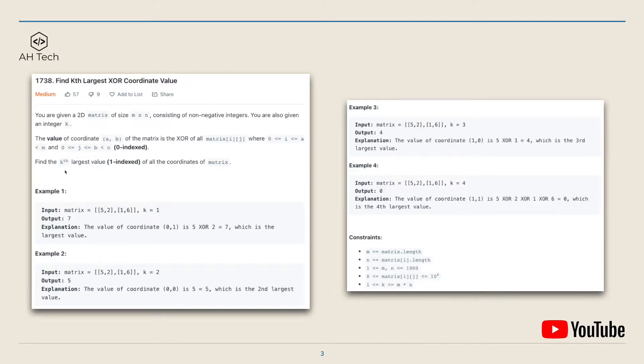We are asked to find the kth largest value of all coordinates of the matrix. In the four given examples, they all have the same input matrix which is [[5, 2], [1, 6]]. The first largest coordinate value is 7, second largest is 5, third is 4, and fourth largest is 0.